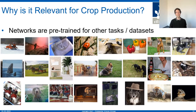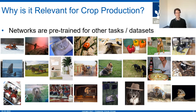Looking more closely at the images used for pre-training raises an obvious question: why is it relevant for crop production? The images include instruments, animals, room scenes, music instruments, a dog with a hat — nothing related to crop production. So the question is, do I actually need to use this kind of dataset for pre-training the model?